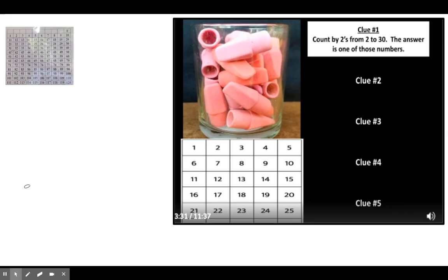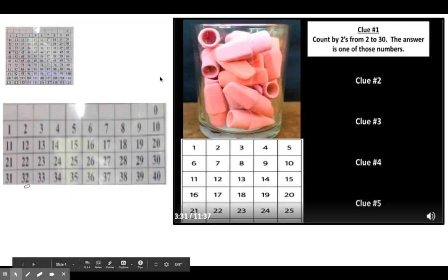So I need to get my 120 chart and then I need to count by twos to 30. I'm going to circle the numbers as I count so I remember which numbers are the ones that you use when you count by twos to 30.